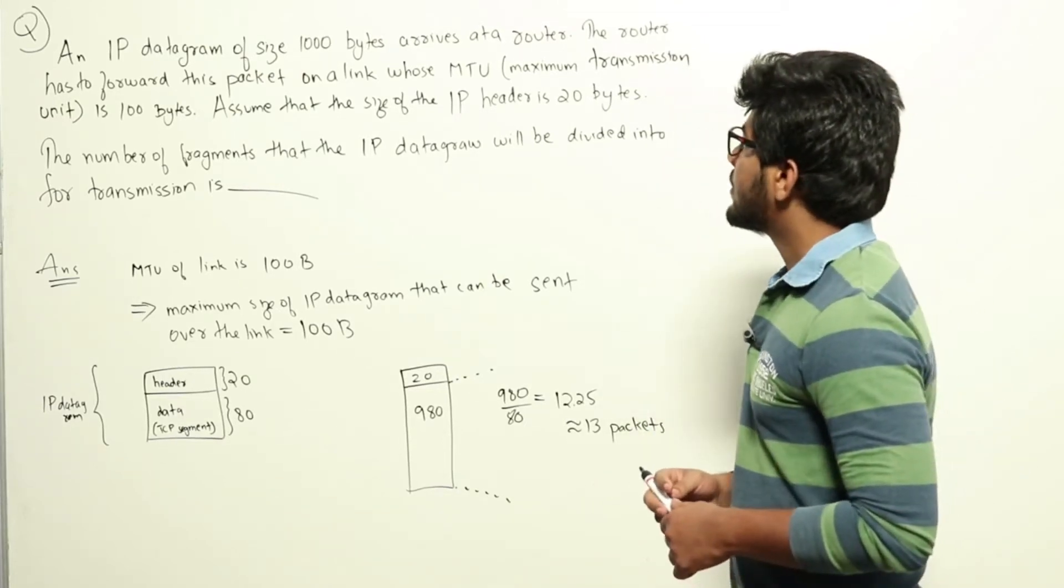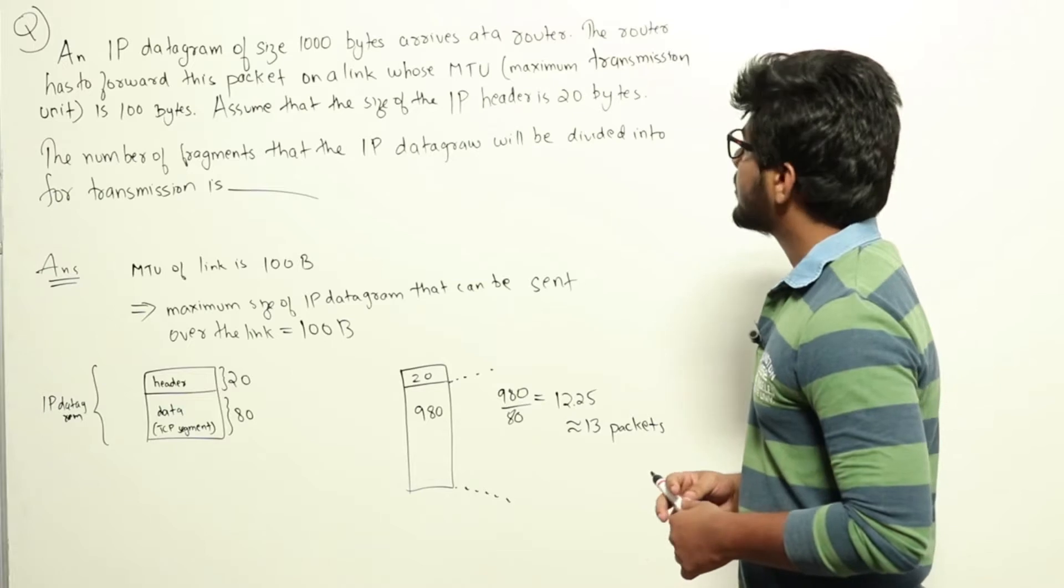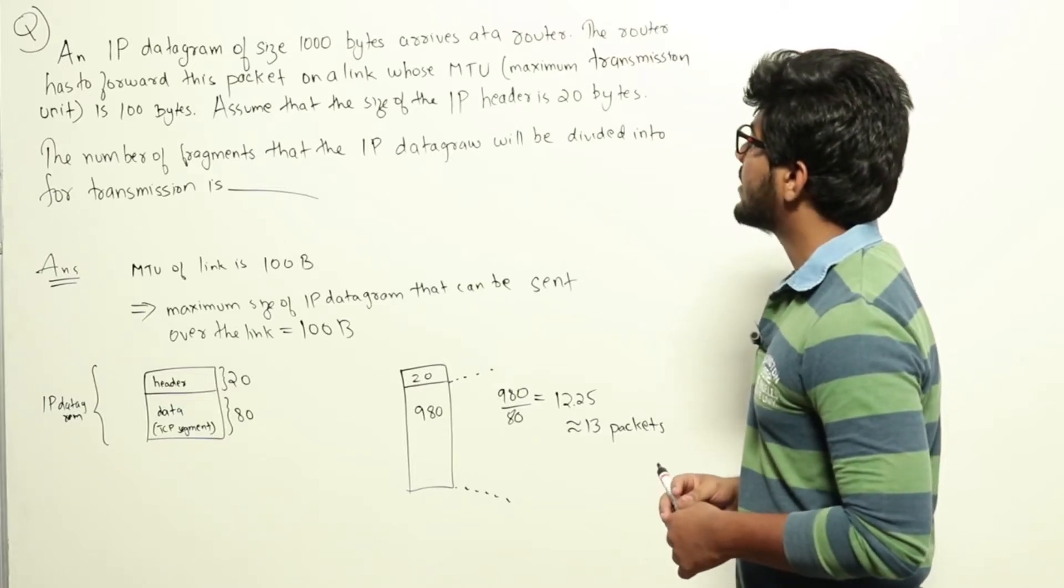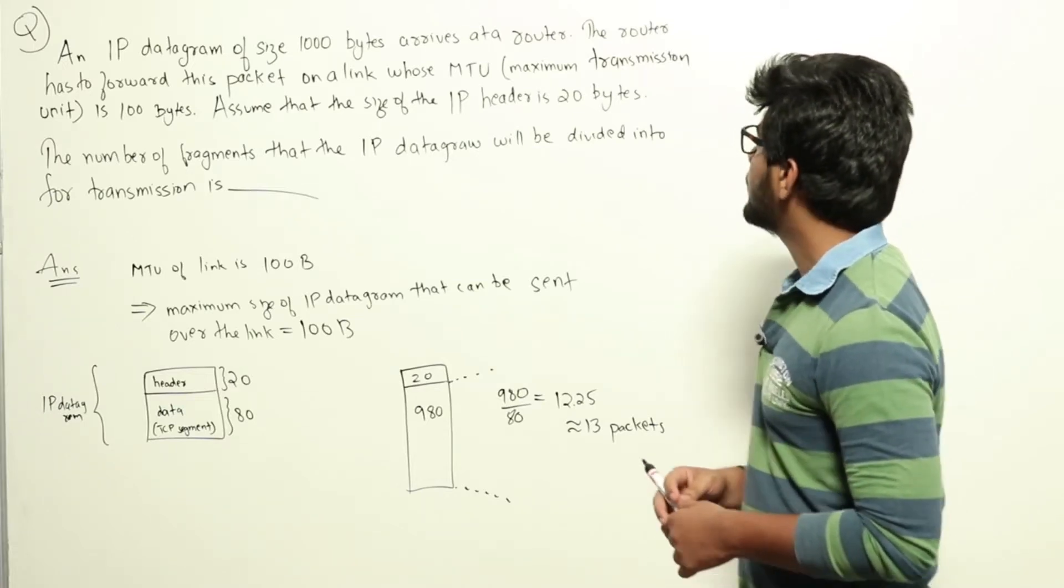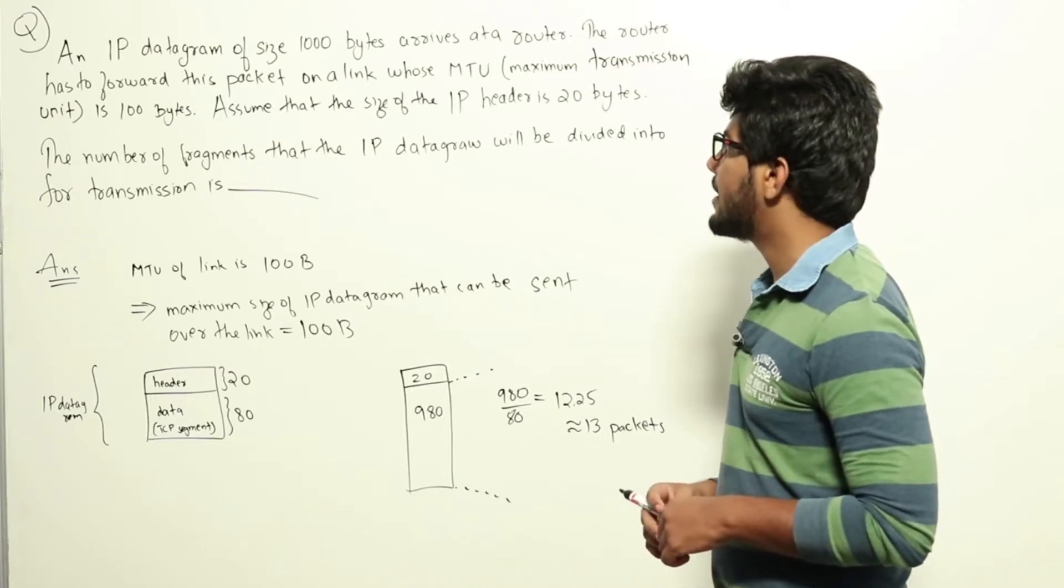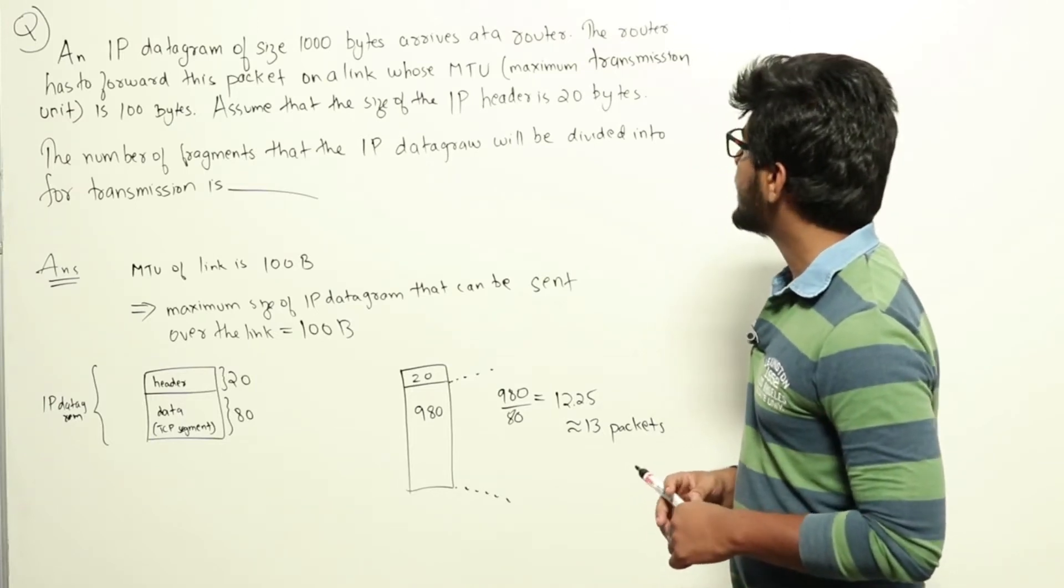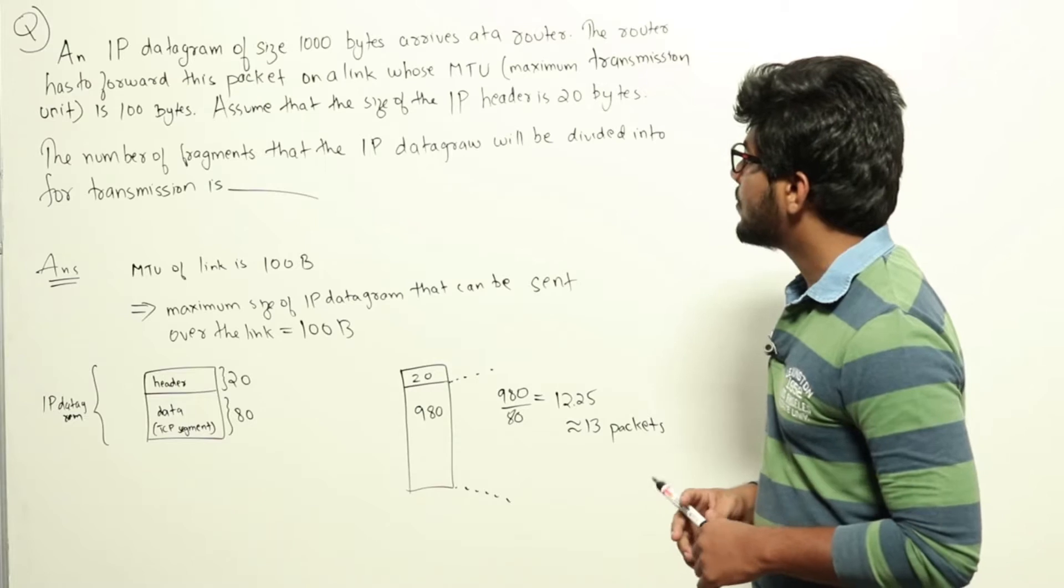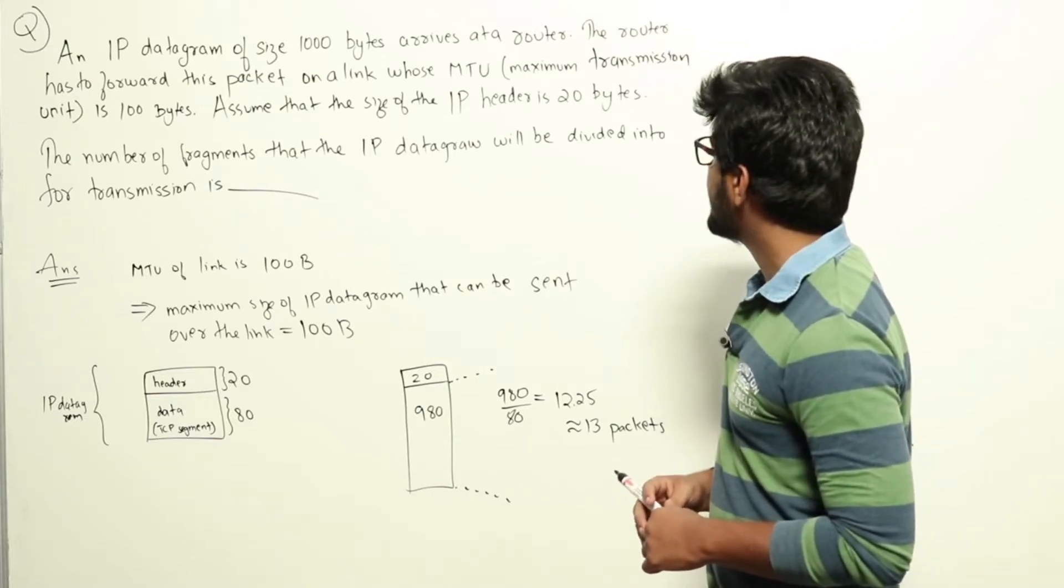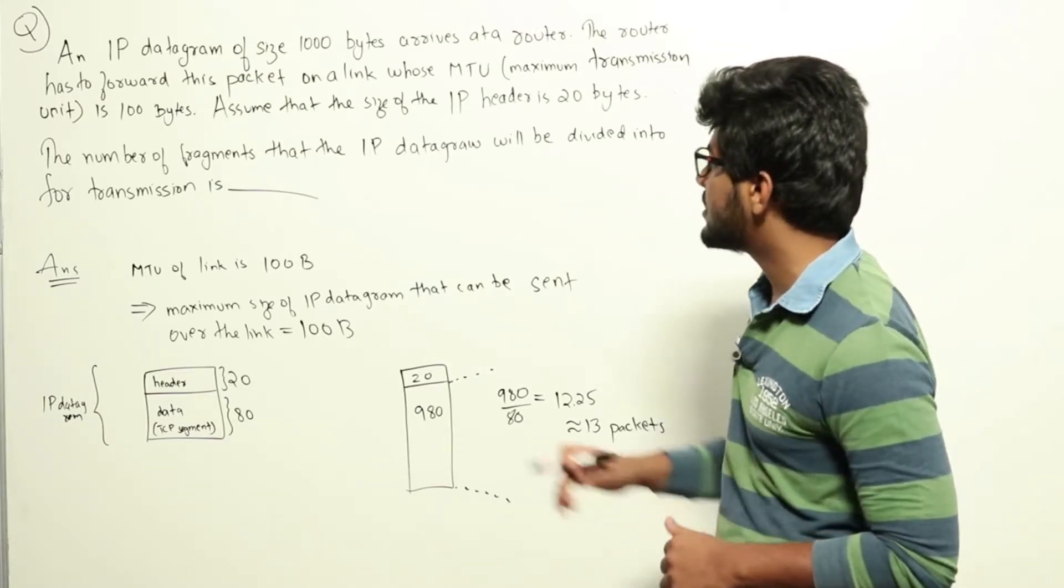An IP datagram of size 1000 bytes arrives at a router. The router has to forward this packet on a link whose MTU, maximum transmission unit, is 100 bytes. Assume that the size of the IP header is 20 bytes. The number of fragments that the IP datagram will be divided into for transmission is blank.